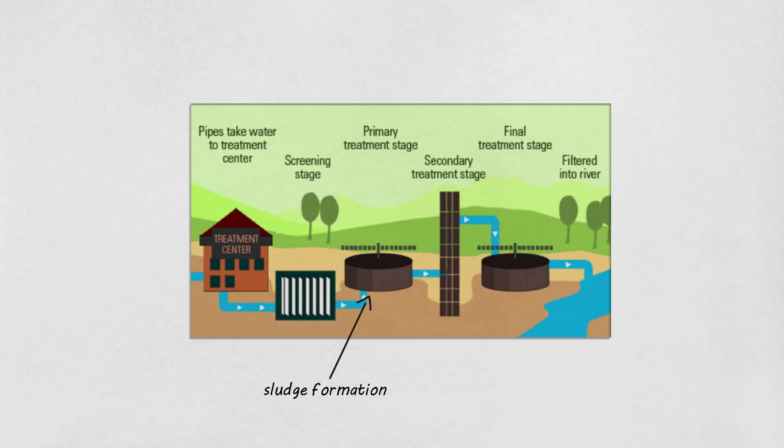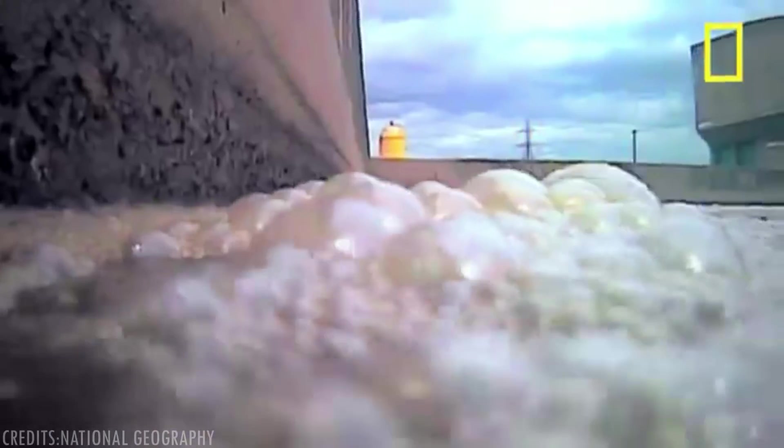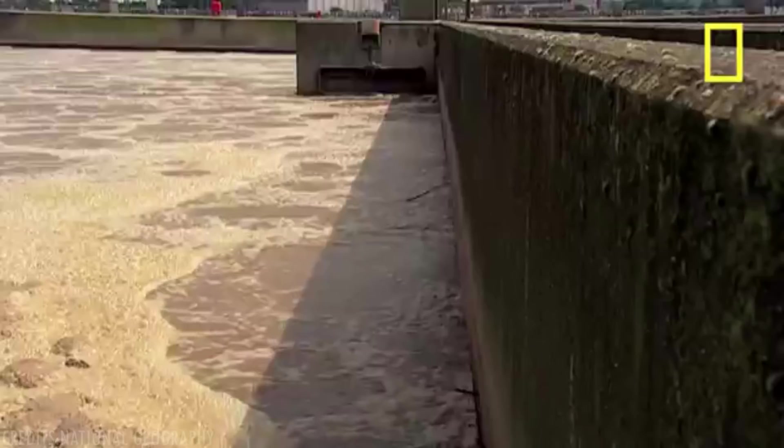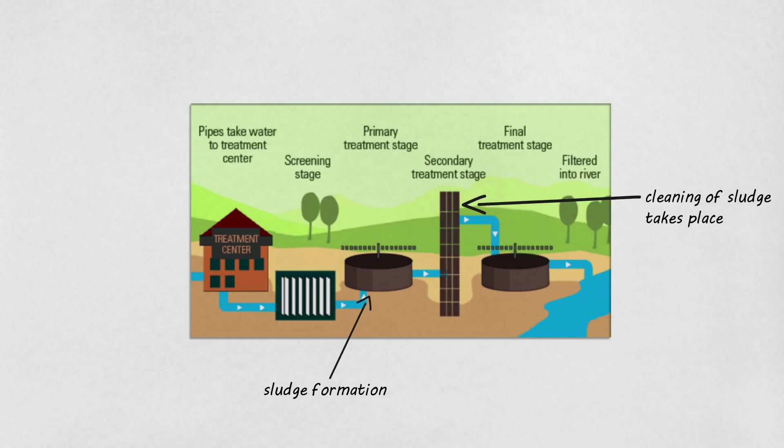In the second stage, billions of microorganisms that are already in the poop breathe in oxygen and destroy the toxic and harmful pollutants such as nitrogen and phosphorus, cleaning the sludge in the process. This process is called activated sludge process.